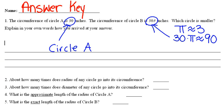Number two, about how many times does radius of any circle go into its circumference? The radius of any circle goes exactly 2 pi times into its circumference. The question asks about how many? 2 pi is about 6, so the answer is 6.